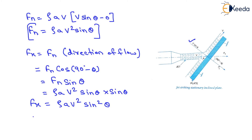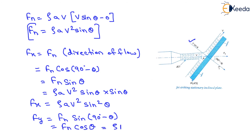The component of Fn perpendicular to flow, Fy, equals Fn sin(90 minus theta), which equals Fn cos theta. Substituting the value of Fn, Fy equals rho A V squared sin theta into cos theta. That is the component of Fn perpendicular to flow. That is all about the force exerted on a stationary flat plate when the plate is held inclined to the jet. Thank you very much, students.